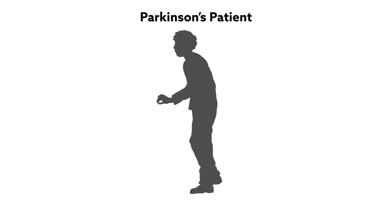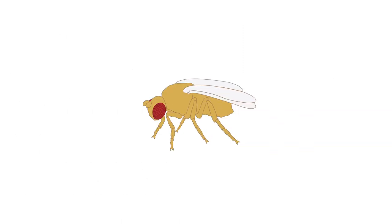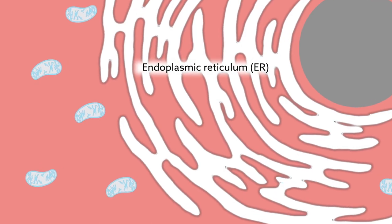But that might not be the whole story. Using the common fruit fly to investigate more fully, researchers have now found that the bulk of the damage stems from a related but different source, the neighboring maze-like endoplasmic reticulum.